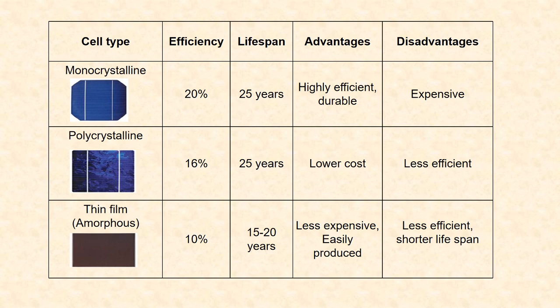Next is the comparison of efficiency of different types of solar cells. Monocrystalline, which is made of single crystal, has an efficiency of 20%, a life span of 25 years, and is highly efficient and durable, but it is expensive. Polycrystalline is made from different crystal silicon, with efficiency of 16% and a life span of 25 years — it is less expensive and less efficient. Thin film, that is amorphous, has efficiency of 10% and life span of 15 to 20 years. Its advantage is that it is less expensive and easily produced, but the disadvantage is that it is less efficient with a shorter life span.